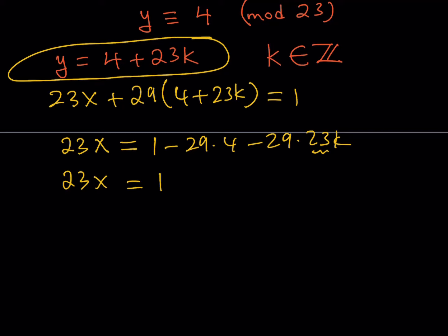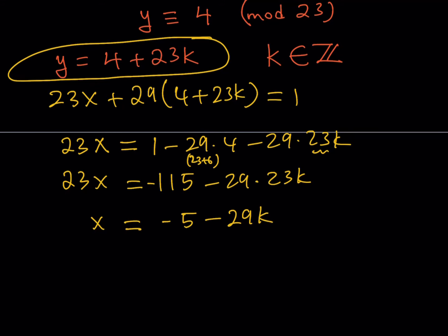So we get negative 115 minus 29 times 23k. Both sides are divisible by 23. Dividing 115 by 23 gives 5, and dividing the right side by 23 gives us x = −5 − 29k. That's our solution for x.